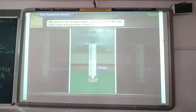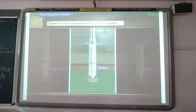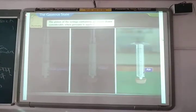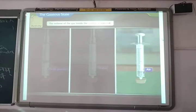The piston of the second syringe containing water, a liquid, also does not move much when pressure is applied. This shows that liquids also cannot be compressed when pressure is applied. This indicates that the volume of the gas inside the syringe is reduced. Thus, on applying pressure, air gets compressed.